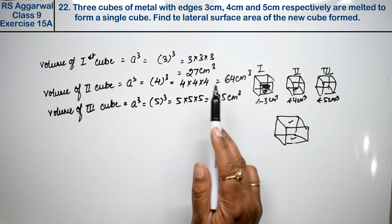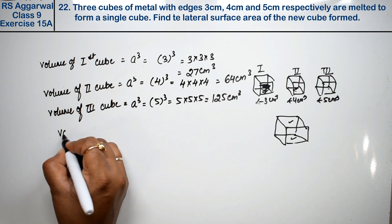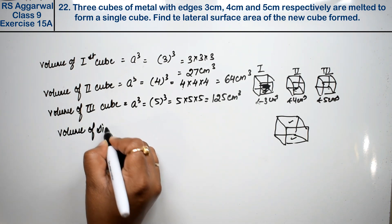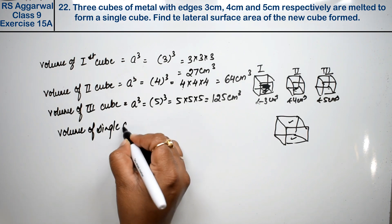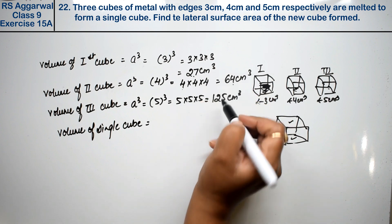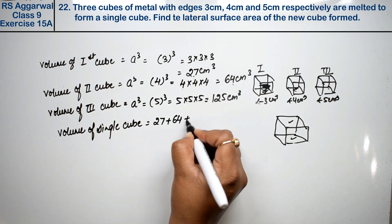Now these three volumes melt into one. So what should the volume of single cube be? If we add these three volumes, then our single volume will come.